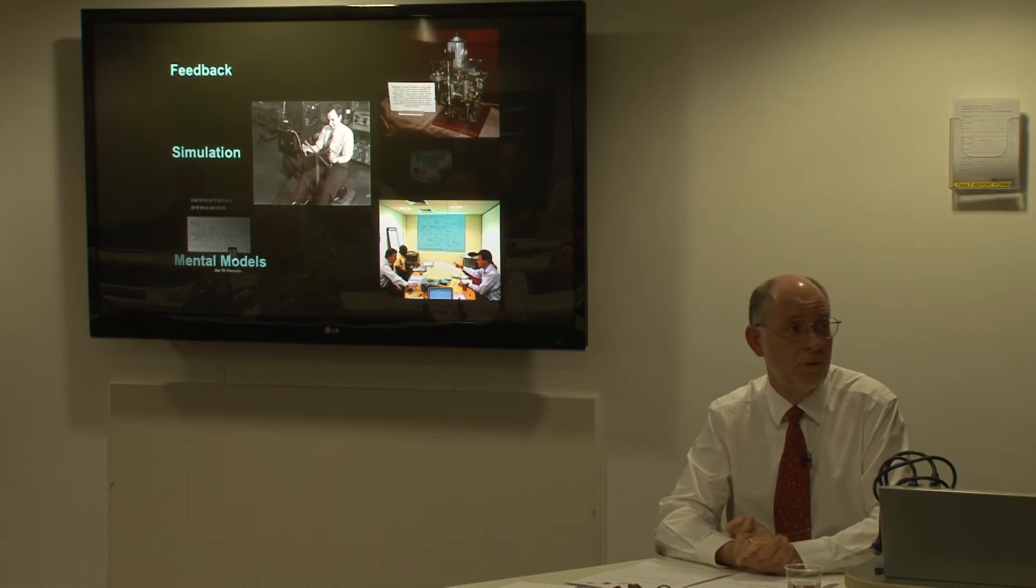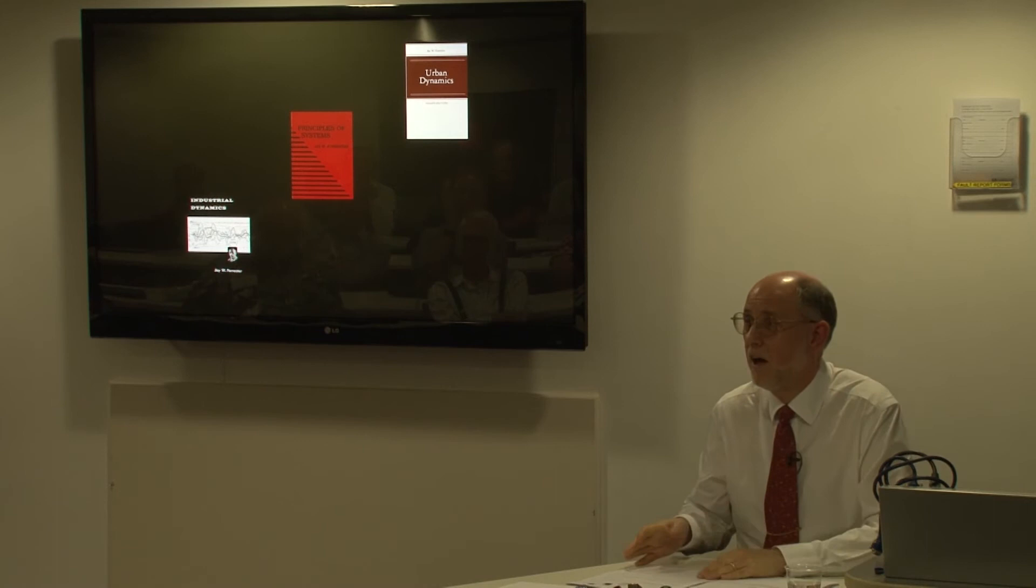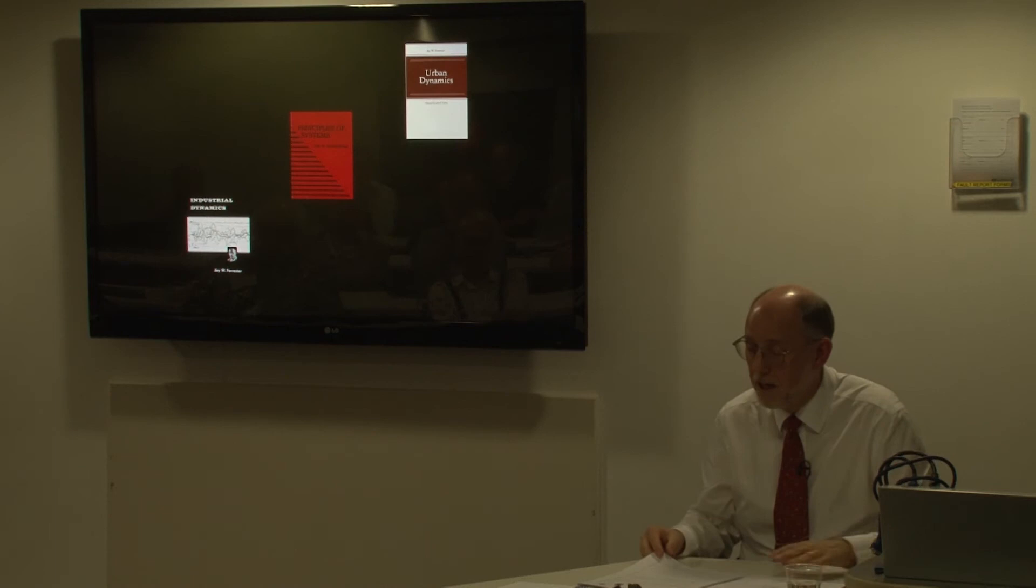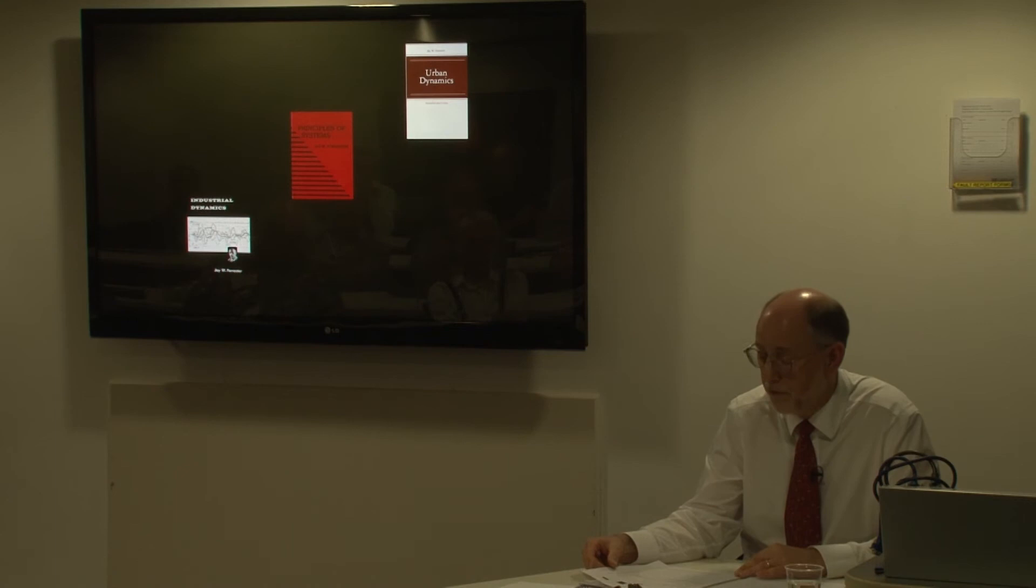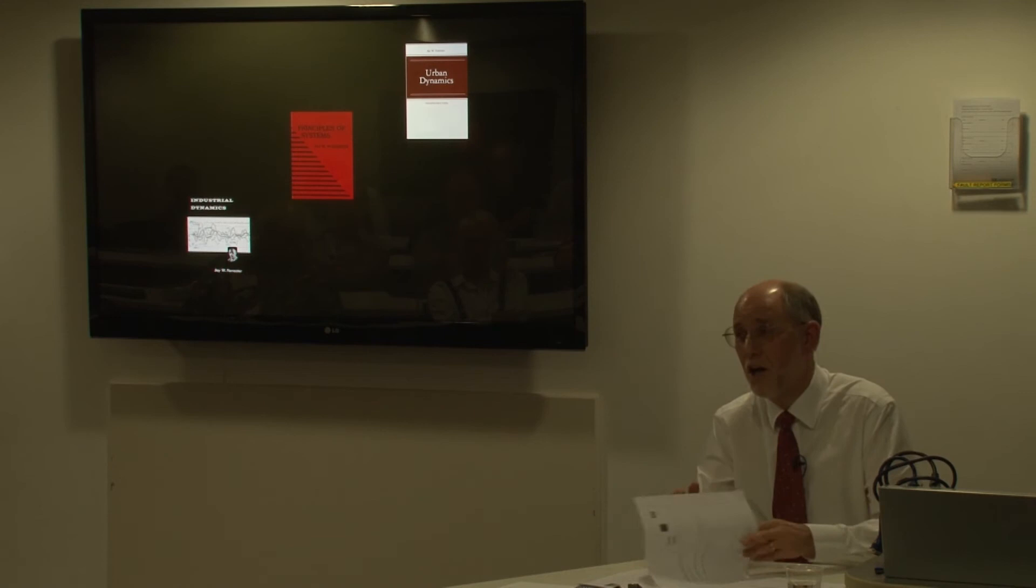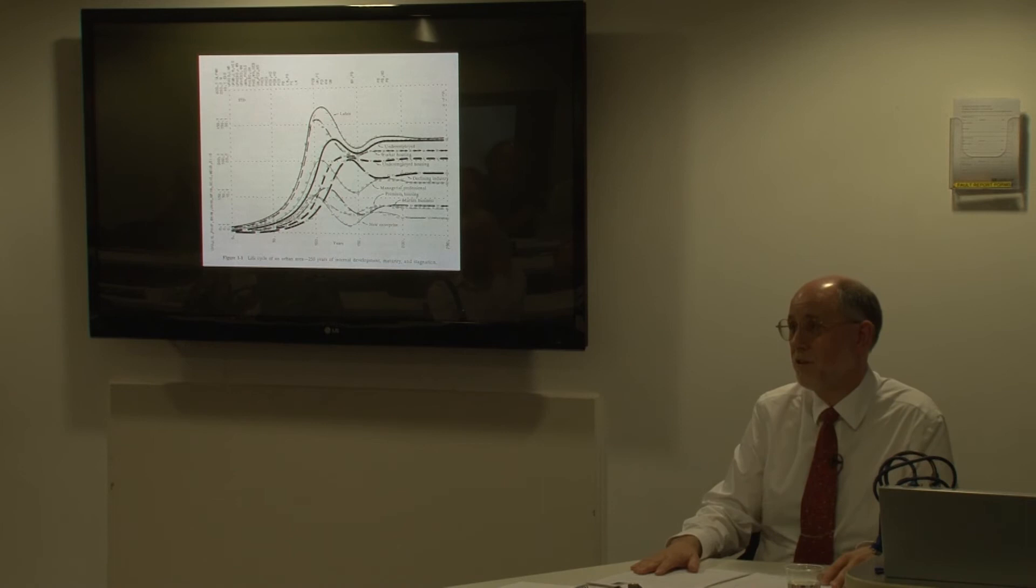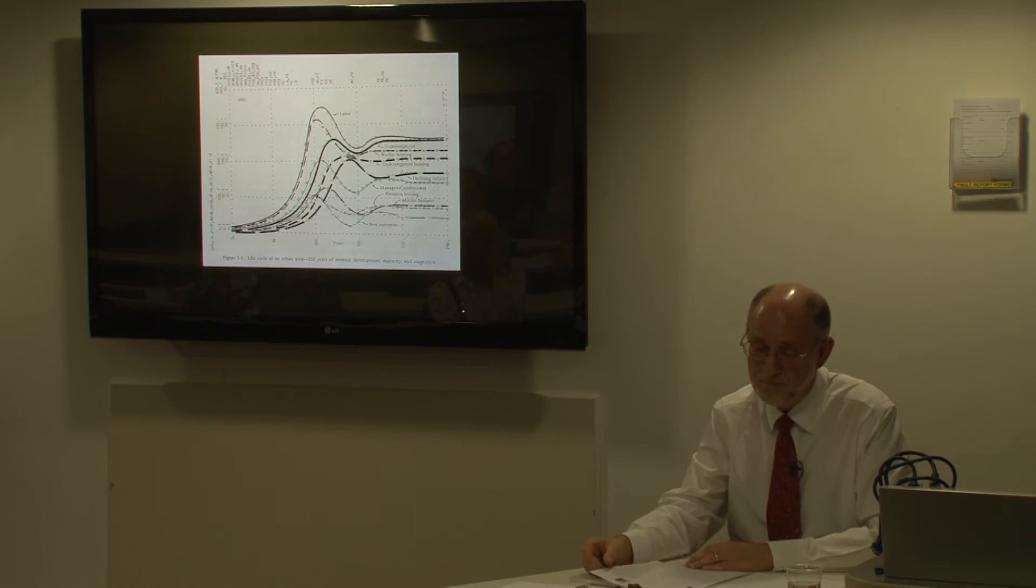1968 produces his book Principles of Systems—rather more mathematical analysis of feedback systems. I rather like that one. In 1969, John Collins, the former mayor of Boston, visited MIT and spent a year there. He had the office next to Jay and they got talking about the growth and stagnation of cities and how these could be understood. This led to the urban dynamics work and the urban dynamics book: Why do cities grow? Why do they stagnate? How can you reinvigorate that growth?